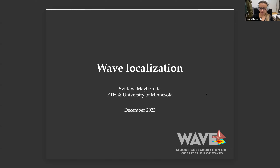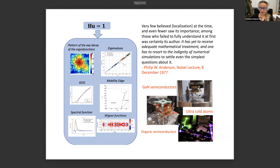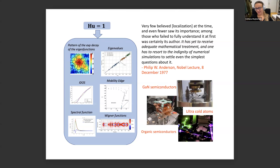I'm going to talk about the phenomenon of wave localization, and in particular one of the instances of it, which is the famous Anderson localization. The story goes back at least 50 years when Anderson got the Nobel Prize for it. And the story today is more about the new concept that we have introduced with Marcel Filoche — the landscape of localization.